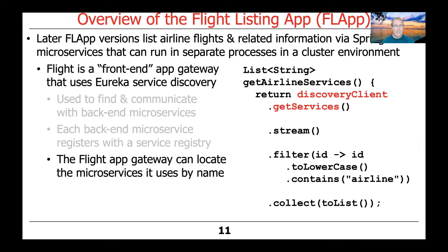The flight app gateway can access the microservices in various ways. One way is by accessing them through the names of the microservices. When we walk through the code in the next parts of the lesson, you'll see there's a method called getServices on DiscoveryClient. The flight app gateway uses this to get a list of all services registered with Eureka, then filters for airline-related services by looking for the 'airline' substring in the service name, collecting that into a list of strings which is then used to perform operations only on airline services.